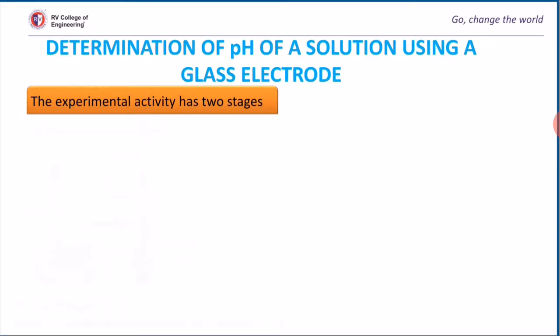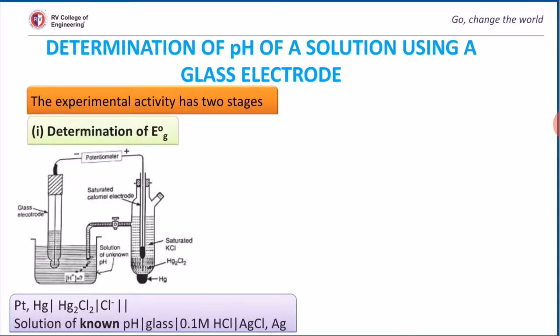Now we will measure the pH of unknown solution using glass electrode with this setup. This experimental setup has two stages. In the first step, we will determine the E naught value. In the second step, we will determine the EG value.